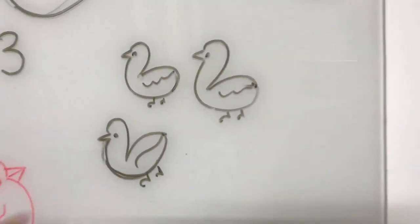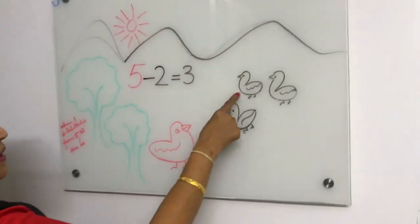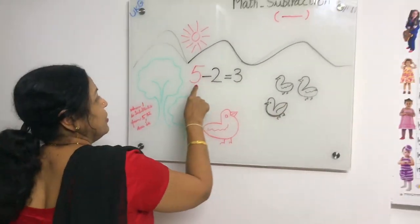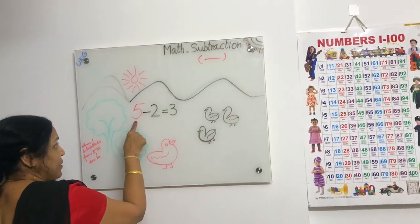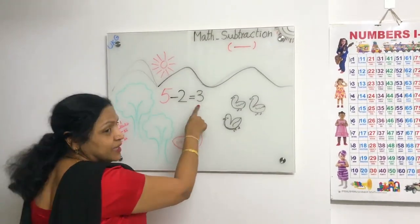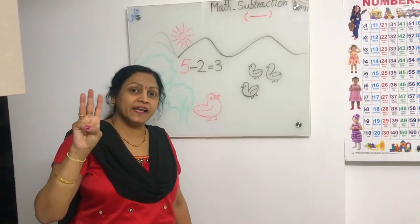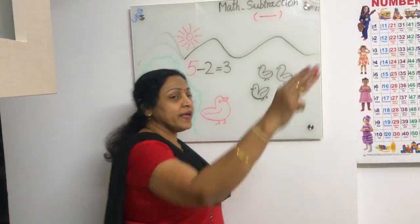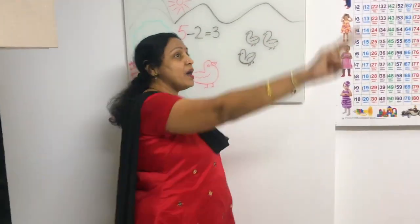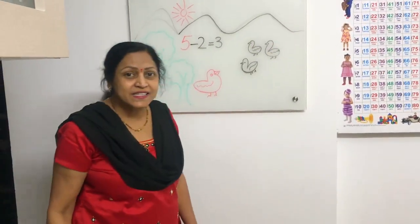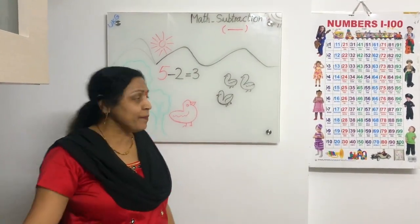Okay children. See, how many remaining ducks are here? One, two, three. So when we subtracted two from five, the answer is three. Now, three little ducks went out one day, over the hills and far away. Mother duck said quack, quack, quack, quack. Two little ducks came back.